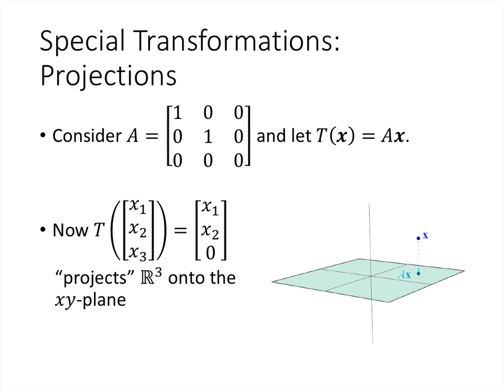Let's end by talking about a couple of special types of transformations. One specific example is a matrix that's almost all zeros with a couple of ones, but critically the last column and the last row are both filled with zeros. When we multiply a vector [x1, x2, x3] by this matrix, the first and second entries are unchanged but the third entry becomes zero. This is called a projection — it takes a point in three-dimensional space, kills the z-coordinate, and collapses it down to the corresponding point on the xy-plane.